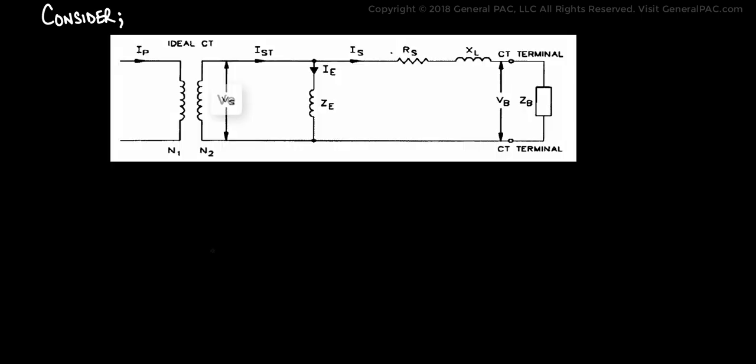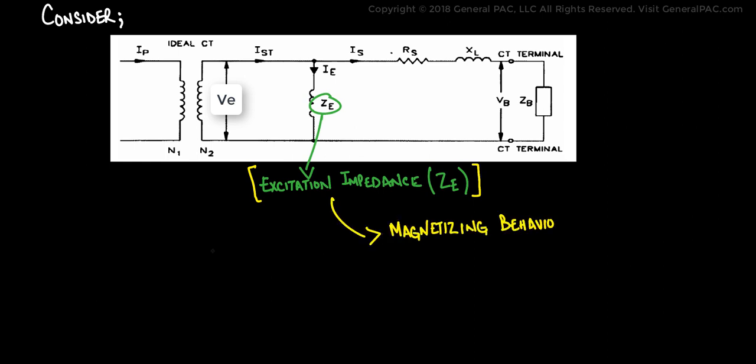This equivalent circuit model of a CT is drawn as you can see on the screen. There is an excitation impedance which we will represent by ZE. It tells us about the magnetization behavior of the CT core. And this ZE branch or the ZE value, or the excitation branch, it is non-linear in nature.